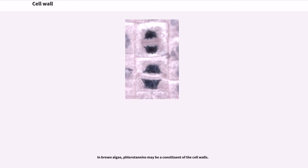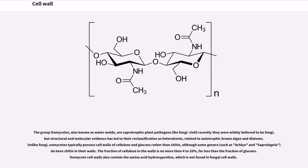In brown algae, phlorotannins may be a constituent of the cell walls. The group oomycetes, also known as water molds, are saprotrophic plant pathogens like fungi. Until recently they were widely believed to be fungi, but structural and molecular evidence has led to their reclassification as heterokonts, related to autotrophic brown algae and diatoms. Unlike fungi, oomycetes typically possess cell walls of cellulose and glucans rather than chitin, although some genera, such as Achlya and Saprolegnia do have chitin in their walls. The fraction of cellulose in the walls is no more than 4-20%, far less than the fraction of glucans. Oomycete cell walls also contain the amino acid hydroxyproline, which is not found in fungal cell walls.